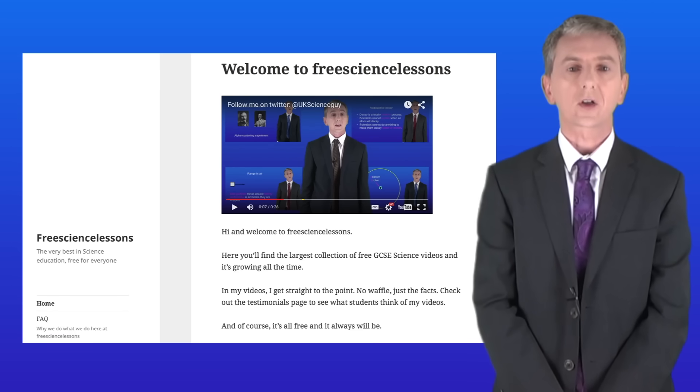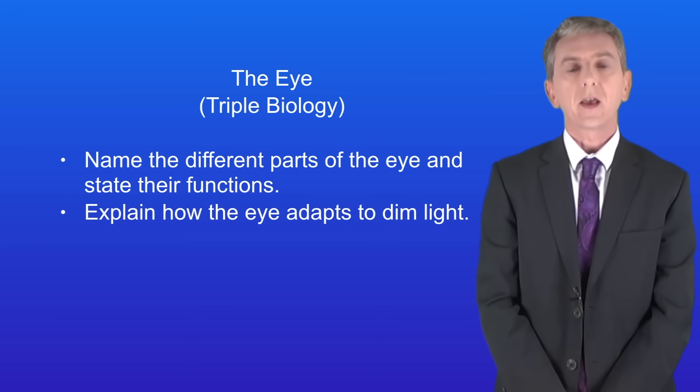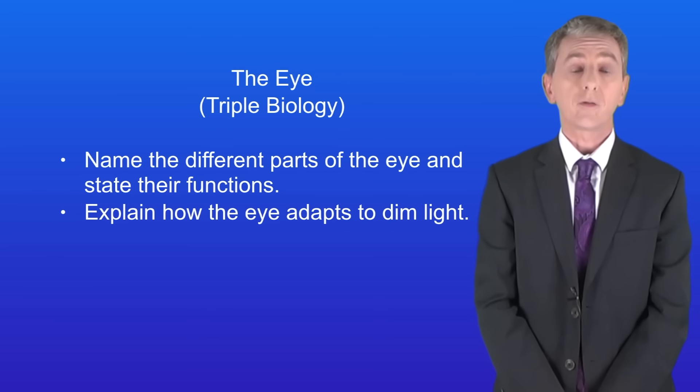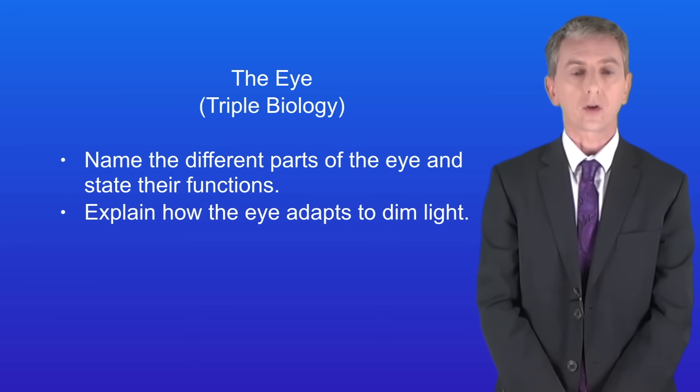Hi and welcome back to freesicelessons.co.uk. By the end of this video you should be able to name the different parts of the eye and state their functions. You should then be able to explain how the eye adapts to dim light, and this is for triple biology students only.